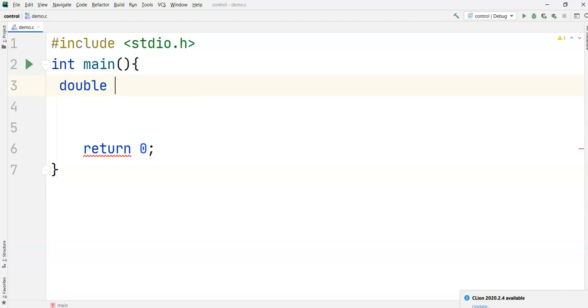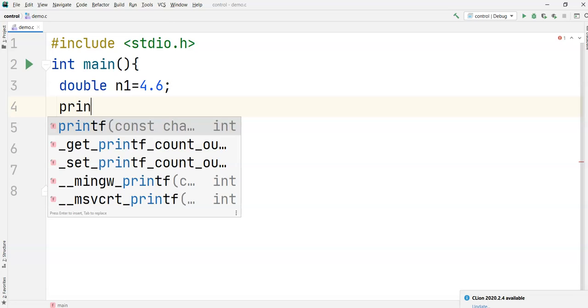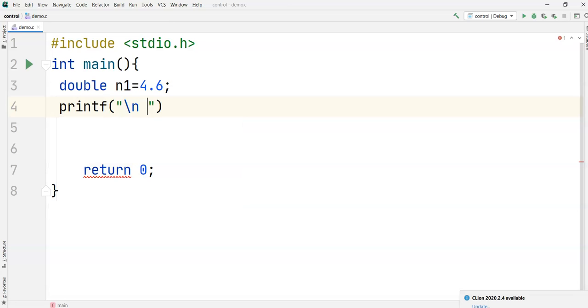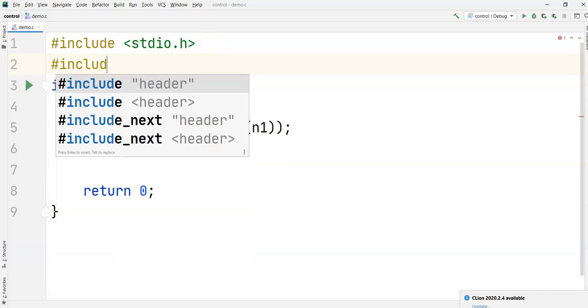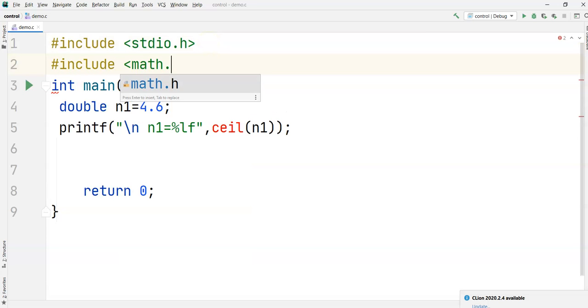So I will consider double n1 is equal to 4.6 and you try to print the value n1 is equal to percentile lf. And here I am using ceil of n1. It gives me an error here because whenever we are using math function, we need to import the library #include <math.h>. So now the error is gone.